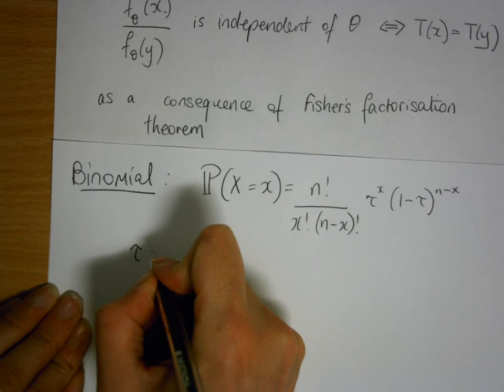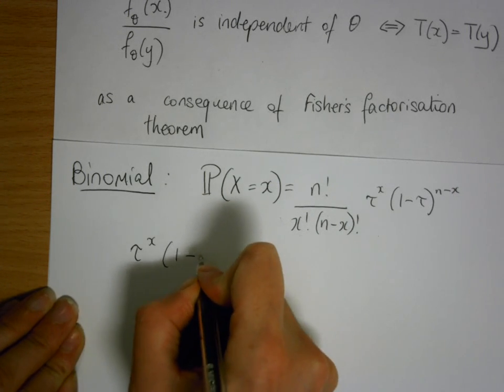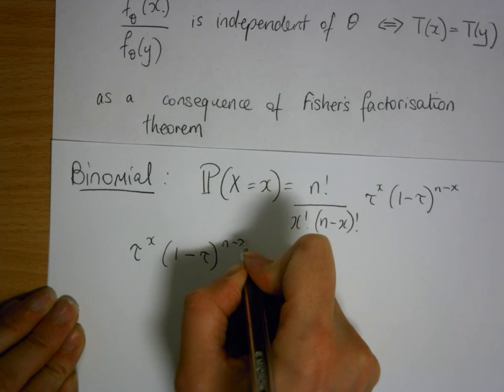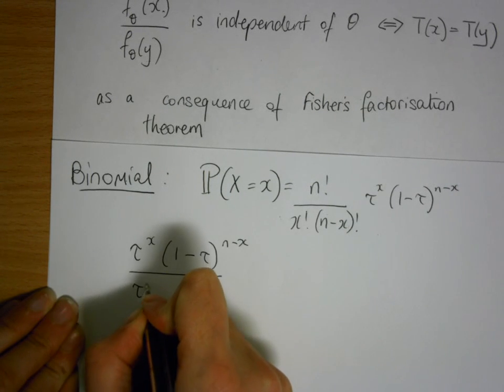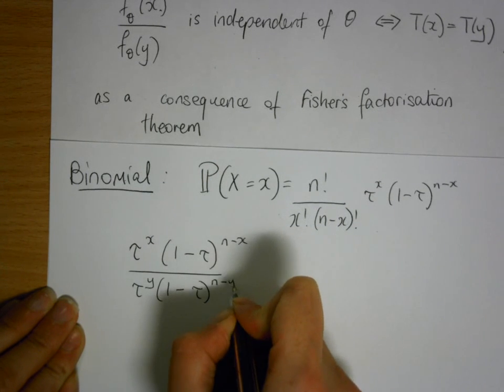So we're really looking at tau to the power of x, 1 minus tau to the n minus x, over tau to the power of y, 1 minus tau to the power of n minus y.